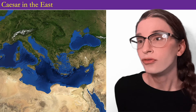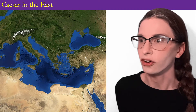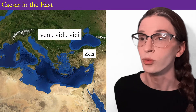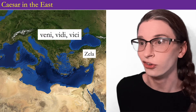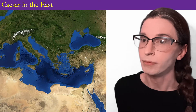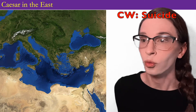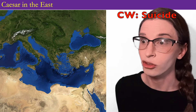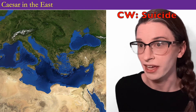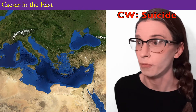Caesar fights some more in the East, including a famous victory against Pharnaces at Zela, about which he writes "veni vidi vici" — I came, I saw, I conquered. Finally, he faces off against the last of the Optimates in Africa. When Caesar wins, many of the Optimates commit suicide. Even though Caesar is known to spare his Roman enemies, they would rather die than live in Caesar's Rome.